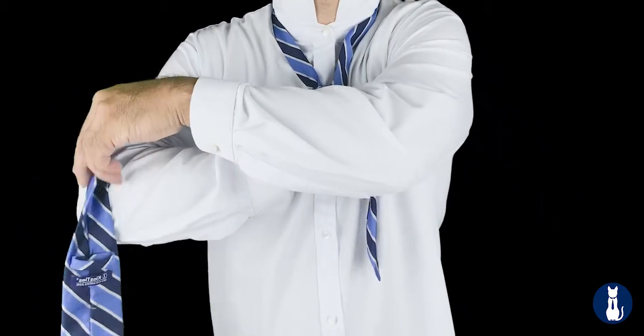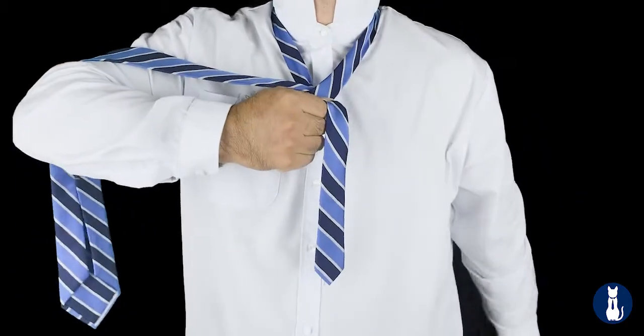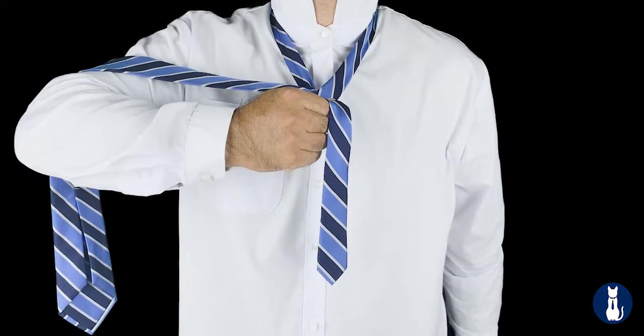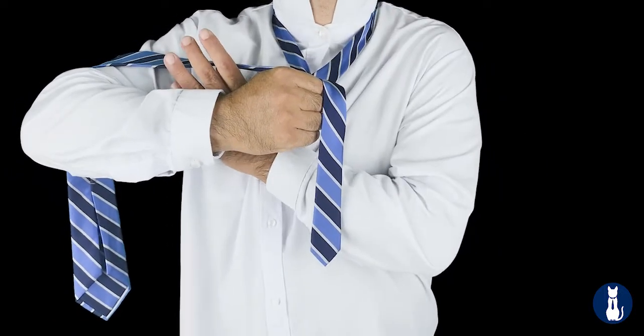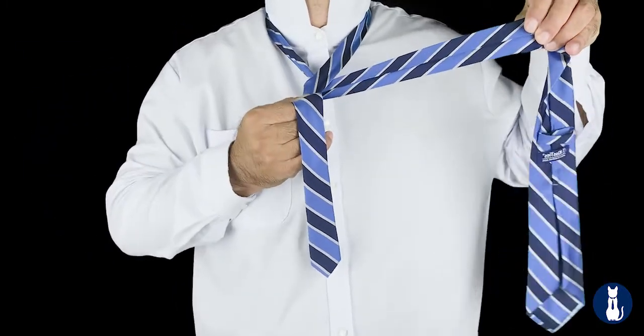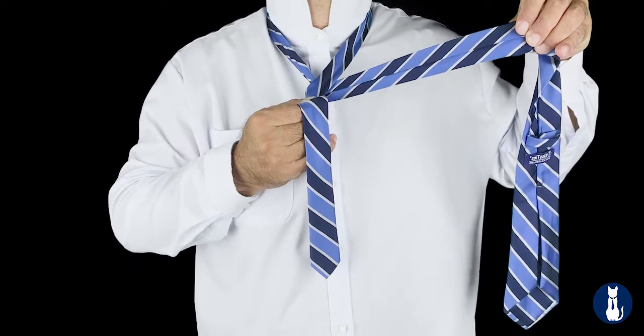Now we're going to take the tie and make it go behind the hole. So go ahead and reach behind the tie hole, grab the tie, and pull it over to this side. You can see that the seam here is now facing out.